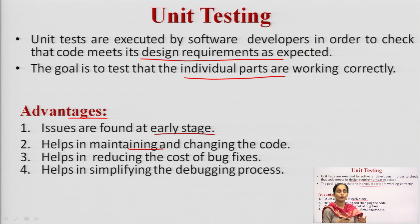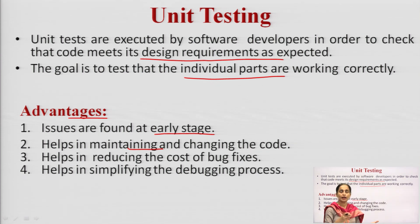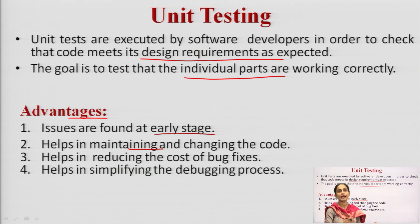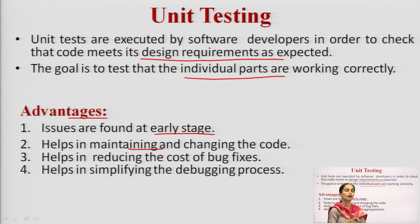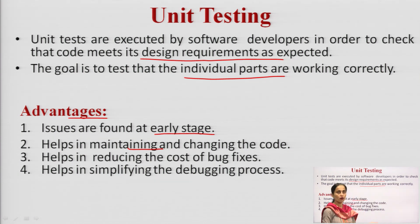Once I come to know there is an error in a function — for example, when doing call by value, call by reference, or writing a factorial program and calling that factorial function in the main program — whether my factorial function behaves properly for 0 or for negative numbers. If it does not, I will simply change the code in the factorial function.